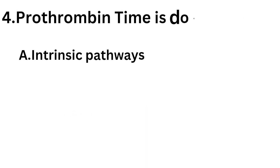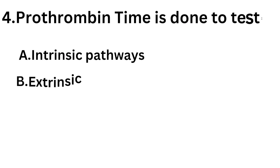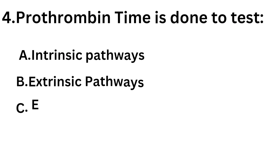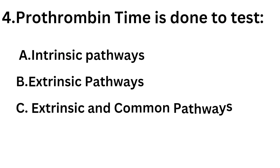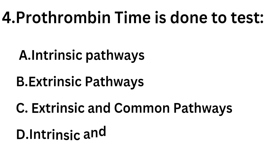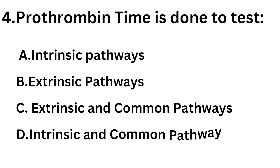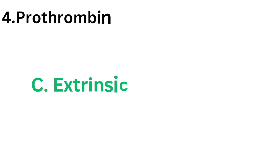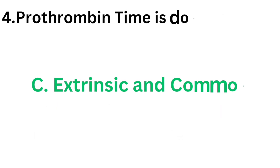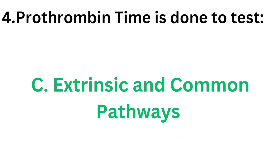Question number four: prothrombin time is done to test — option A intrinsic pathway, option B extrinsic pathway, option C extrinsic and common pathways, option D intrinsic and common pathways. The correct answer is option C, extrinsic and common pathways.